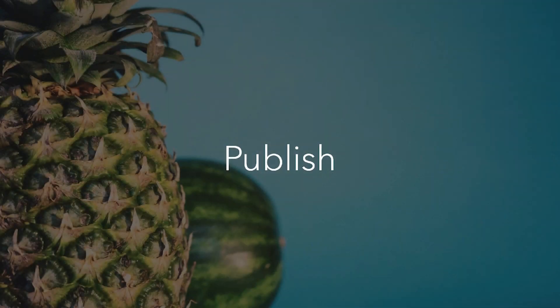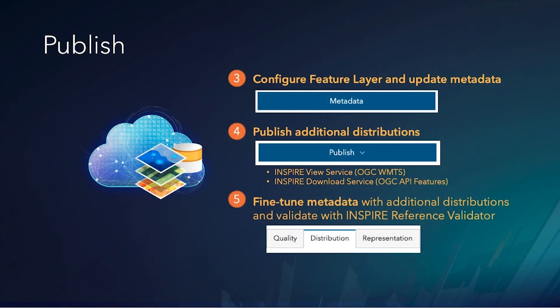The next steps are your data publication workflow. In ArcGIS Online, configure your feature layer and update its metadata. Then publish additional distributions for your Inspire network services. Fine-tune your metadata with the additional distributions and validate it using the Inspire validator.